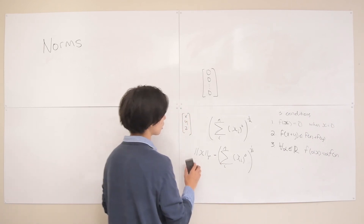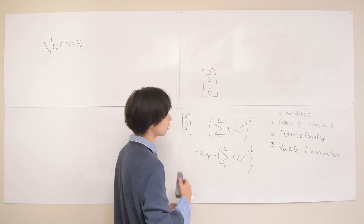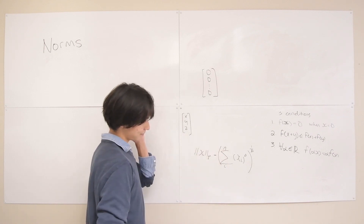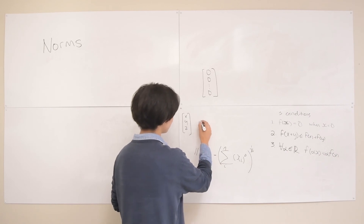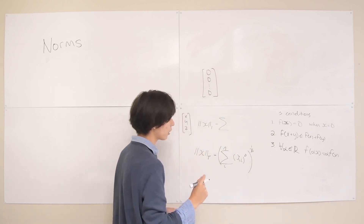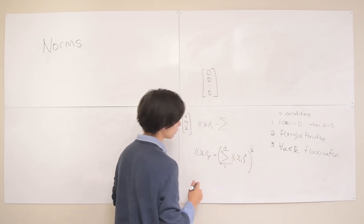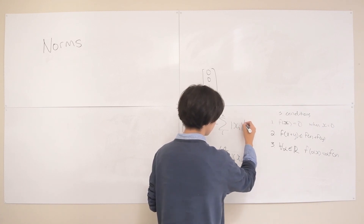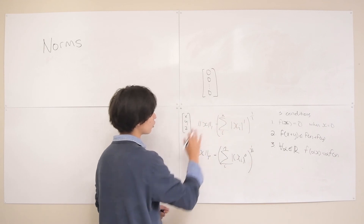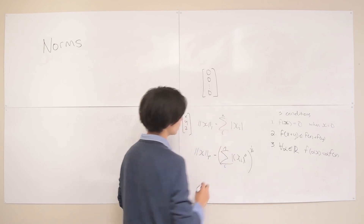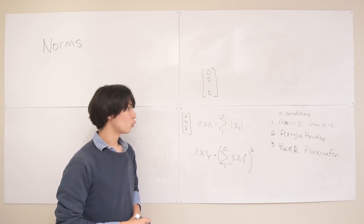Another important norm is the L1 norm, which is the case when p equals 1. In this case, the exponent and the 1-over-p power cancel out, and the L1 norm simply becomes the sum of the absolute values of each element in the vector. This is another frequently used norm in machine learning.